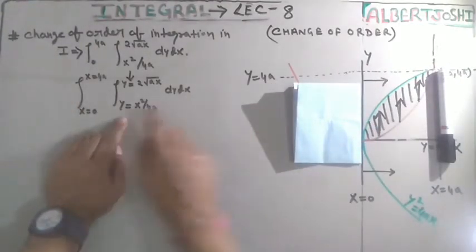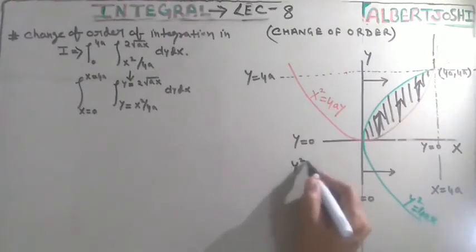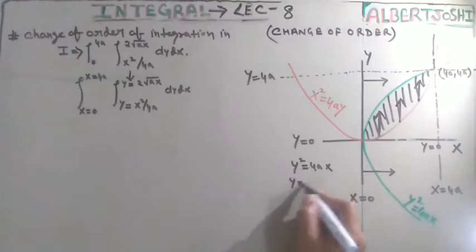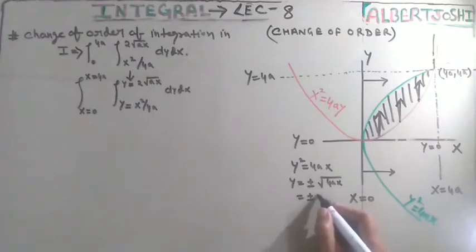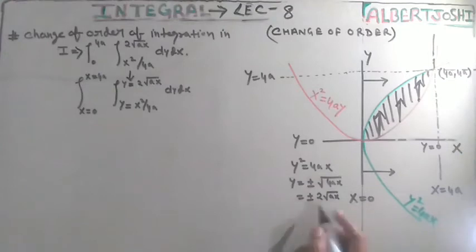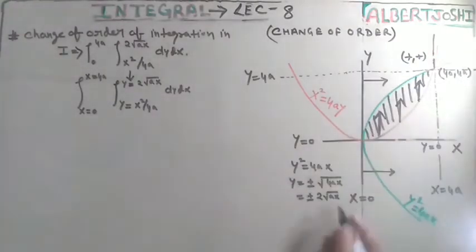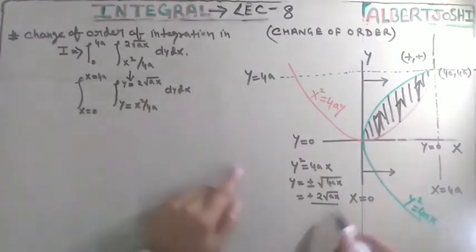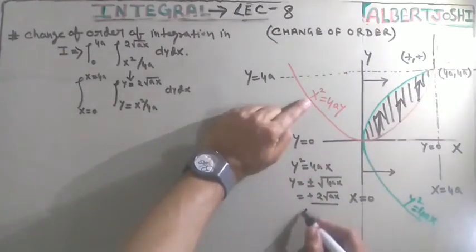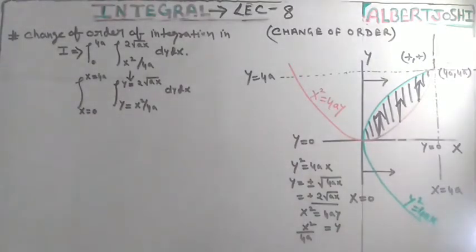After that, he has written y equal to something at x. Actually, he has given y squared equal to 4ax, which means y equal to plus minus square root of 4ax, that is plus minus 2 times square root of ax. But minus will not come because we are in the positive quadrant — plus plus — so we remove the negative. He has also given x squared equal to 4ay, which means y equal to x squared upon 4a. That is the second value.